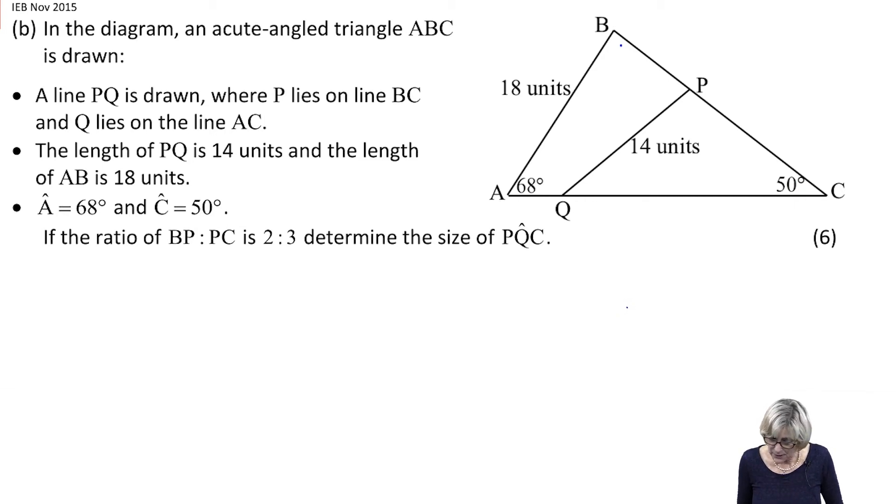Let me read the question first because then I have direction. It says determine the size of PQC. The diagram shows an acute-angled triangle ABC, so all the angles are less than 90 degrees. A line PQ is drawn where P lies on BC and Q lies on AC. The length of PQ is 14 units and the length of AB is 18.